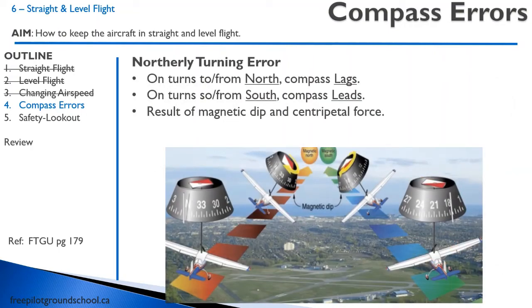The compass also suffers from northerly turning error. On turns to or from the north, the compass will lag. On turns to and from the south, the compass will lead. The reason is that two forces are at play: magnetic dip and centripetal force in the turn. When we add the vectors of these two forces together, the result is that the compass lags in the north and leads in the south.